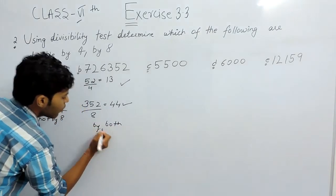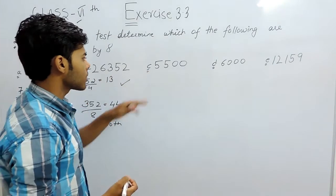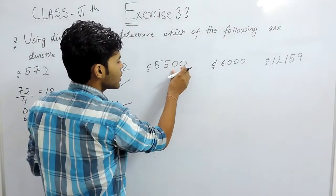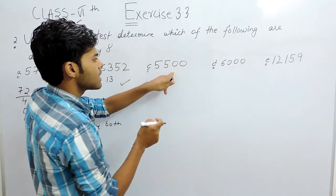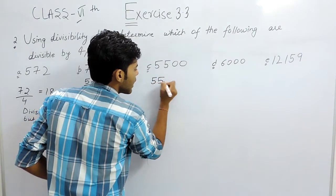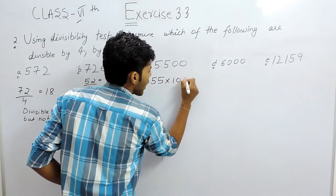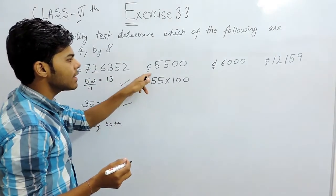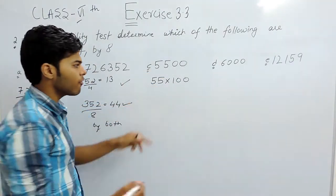In this one the last two digits you think of as 00, but we can also write this like 55 times 100. So if we write it like this, then 100 is divisible by 4. If we divide this by 4, then it will be 25, means it completely divides 100.